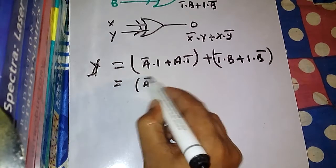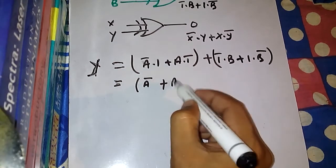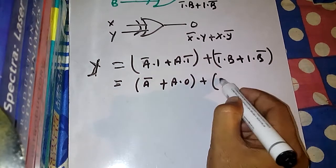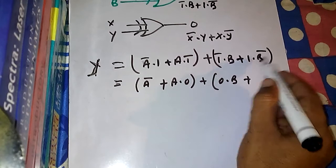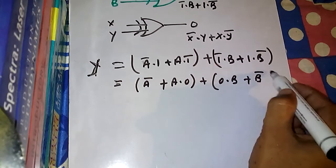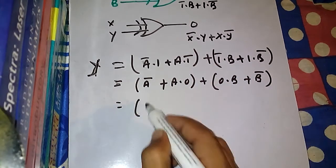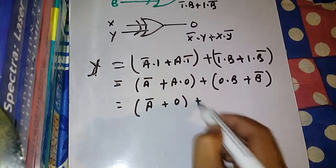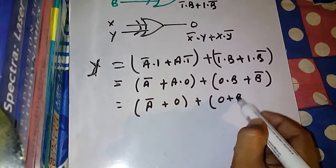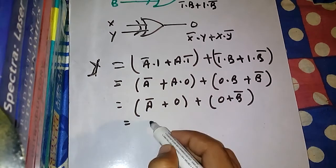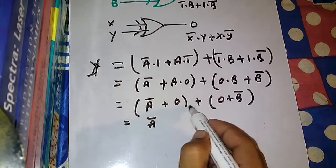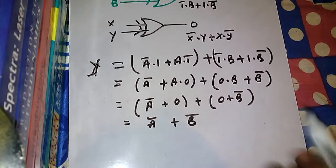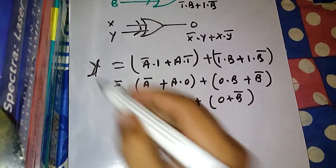Now we can simplify a little. A bar dot one is A bar, and A dot one bar is zero. One bar is zero, so zero dot B is zero. One dot B bar is B bar only. From here, A bar plus zero is zero, plus zero dot B is zero, and plus B bar is B bar. So A bar plus B bar — this is the boolean expression for this given digital circuit.